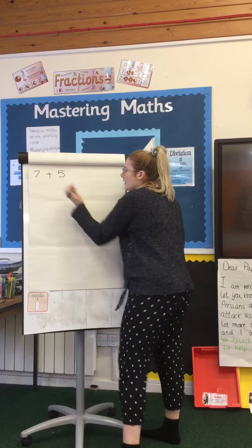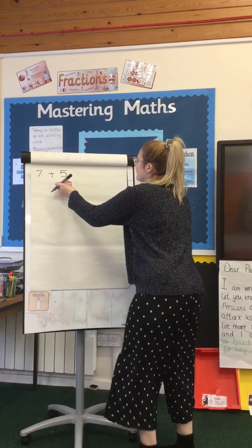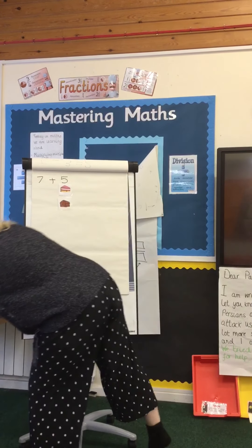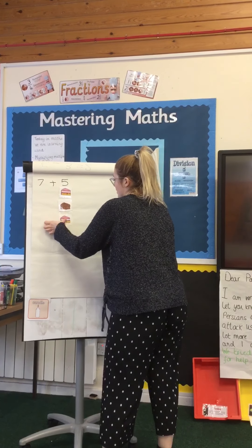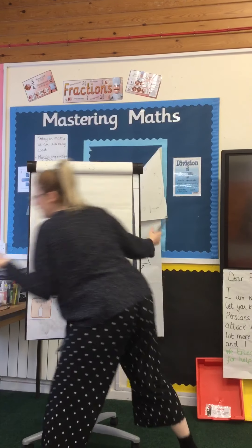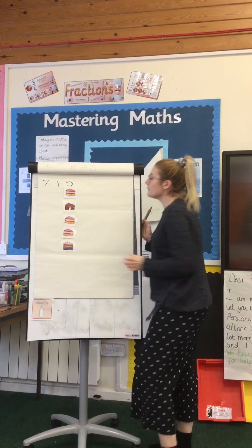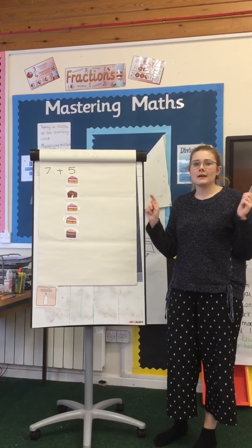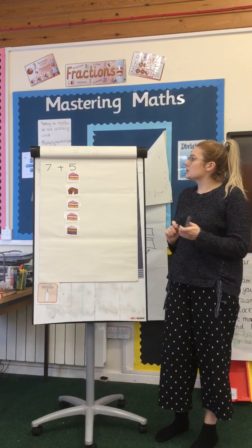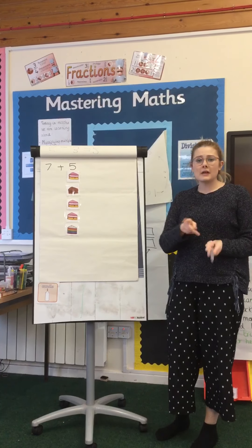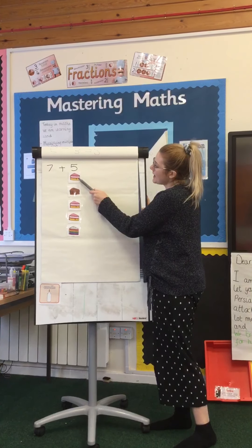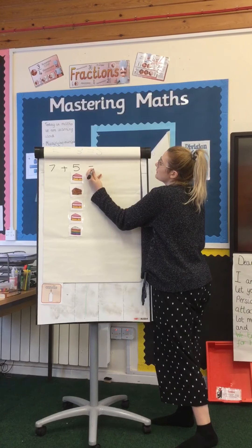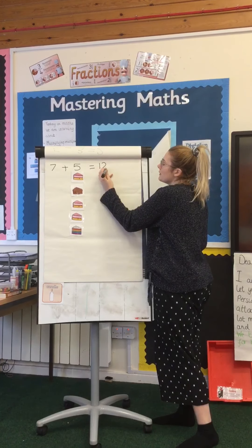So we have 7 cakes, add 5 cakes. I'm going to put my 5 cakes — 1, 2, 3, 4, and 5. Now I don't need to draw dots under my 7 or put cakes under my 7 because I can lock that number in my head. So lock 7 in your head. Now I'm going to start with 7 and add my 5. Ready? You do it with me: 7, 8, 9, 10, 11, 12. So I know that 7 add 5 equals 12.